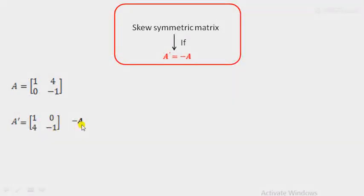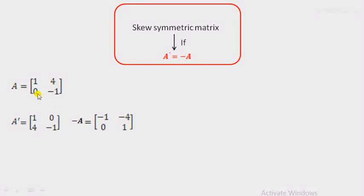Now find the value of minus A. Minus A means we multiply A by a negative sign throughout. So 1 becomes minus 1, 4 becomes minus 4, 0 remains 0, and minus 1 becomes plus 1. Here A' and minus A are not equal. Therefore, it is not a skew symmetric matrix.